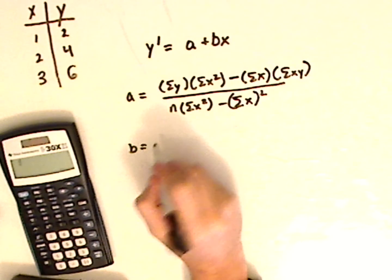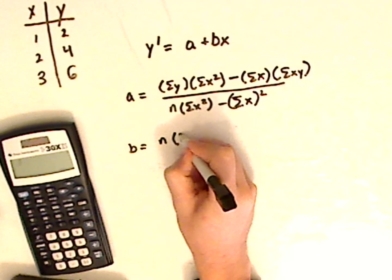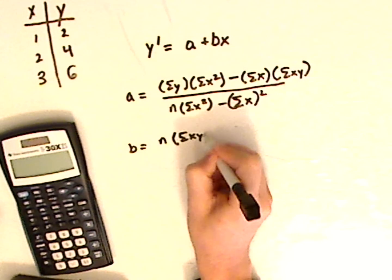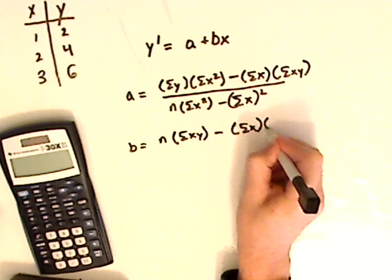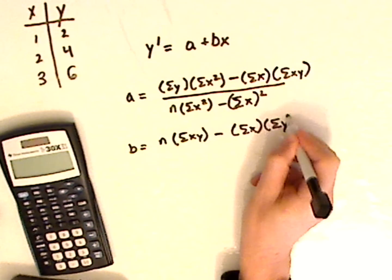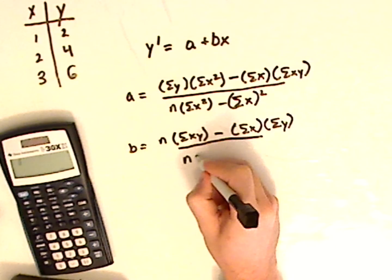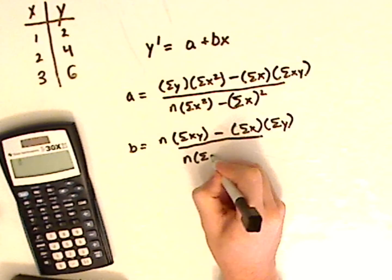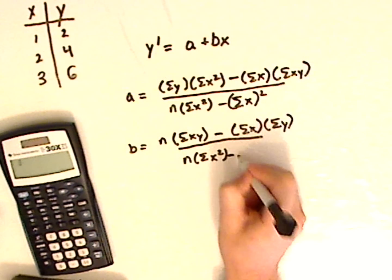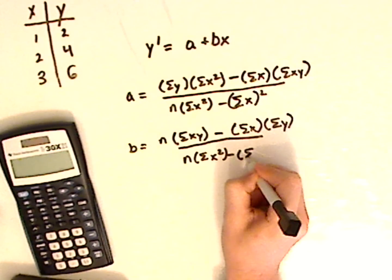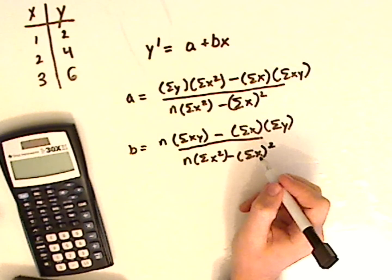Now to find the slope, you have b equals n times the summation of xy, minus the summation of x times the summation of y, all over n times the summation of x squared, minus the summation of x, squared.